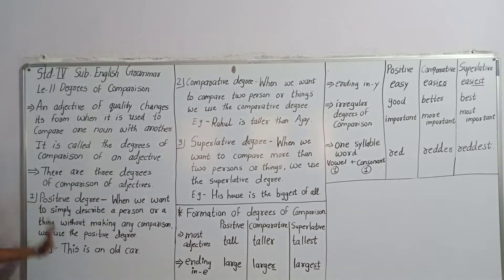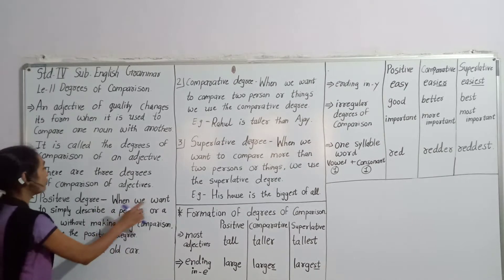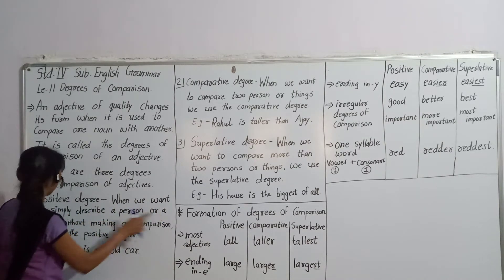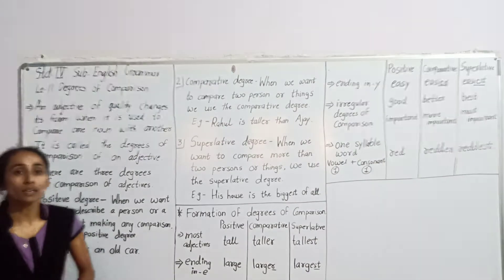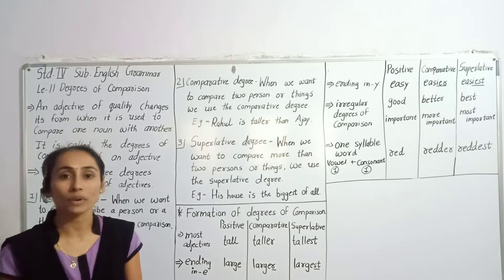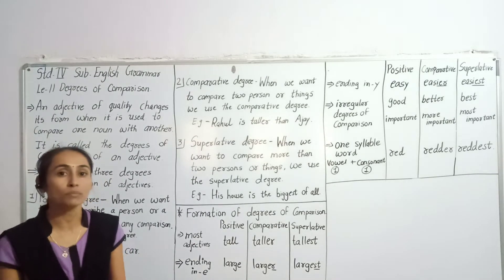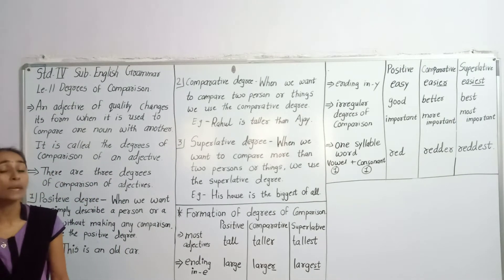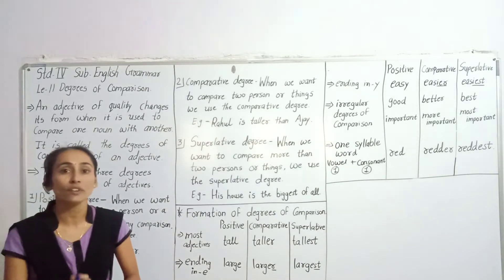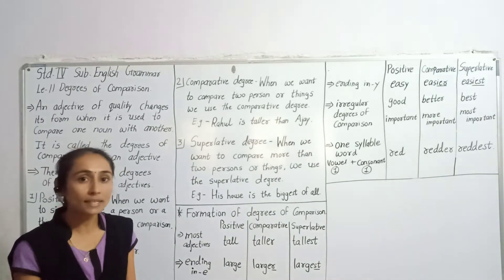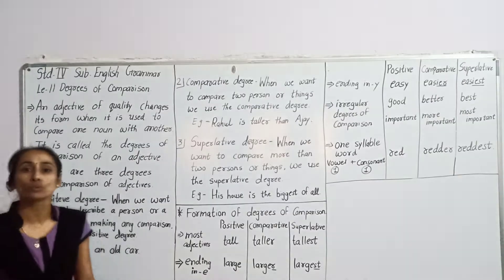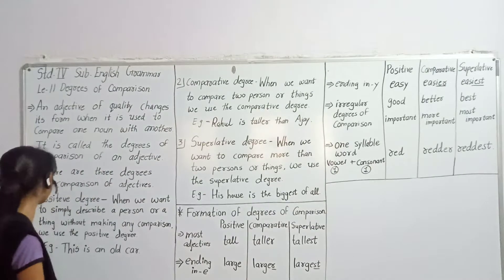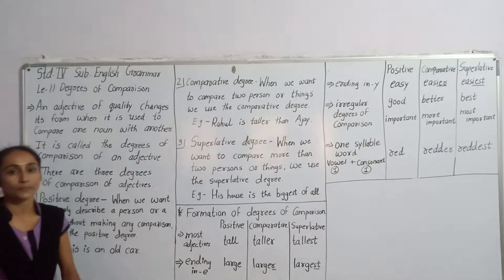Now number one: positive degree. When we use positive degree? When we want to simply describe a person or a thing without making any comparison. Humheh sirf naam ko describe karna hain, kisi ki comparison nahi karni hai.